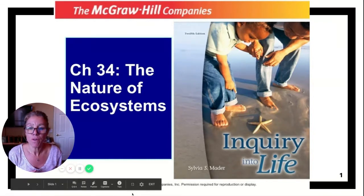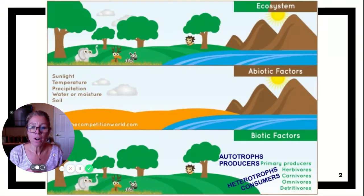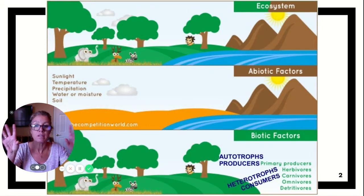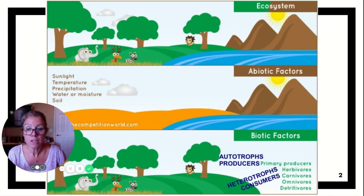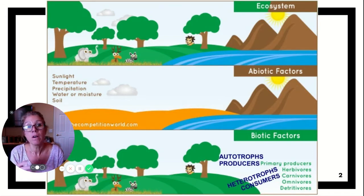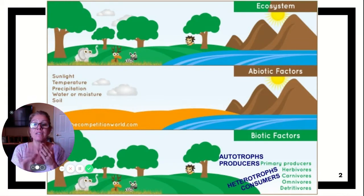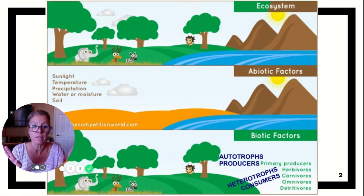This is chapter 34, the nature of ecosystems. The first part we're looking at is the whole ecosystem. A population is a group of similar organisms, and then a community is going to be multiple populations. And then the ecosystem takes into consideration the environment — that's your total ecosystem.